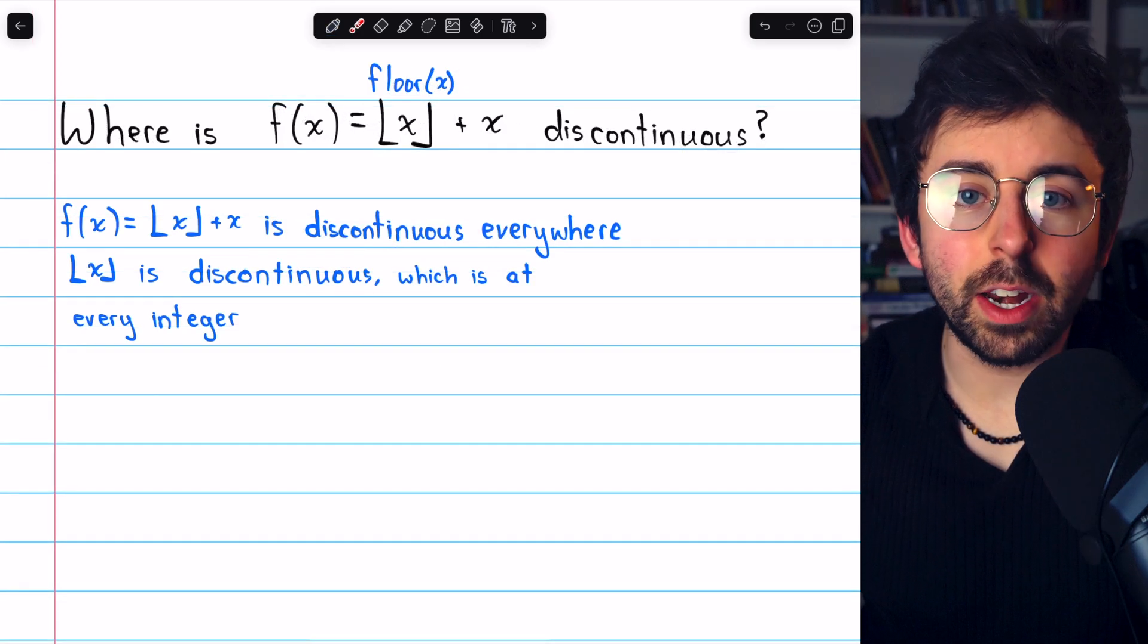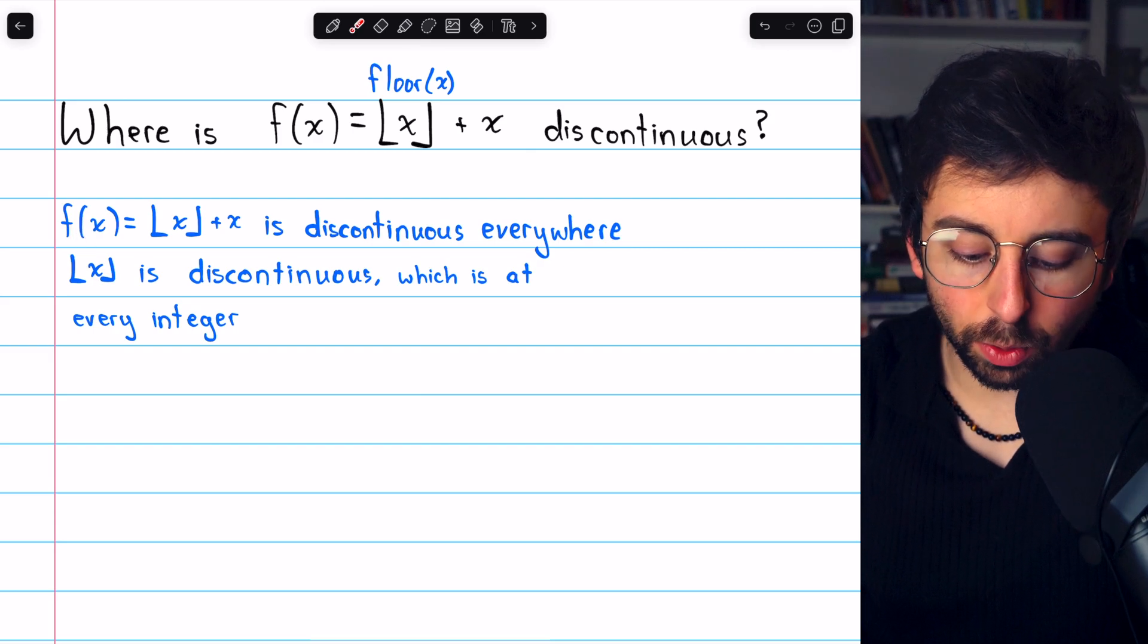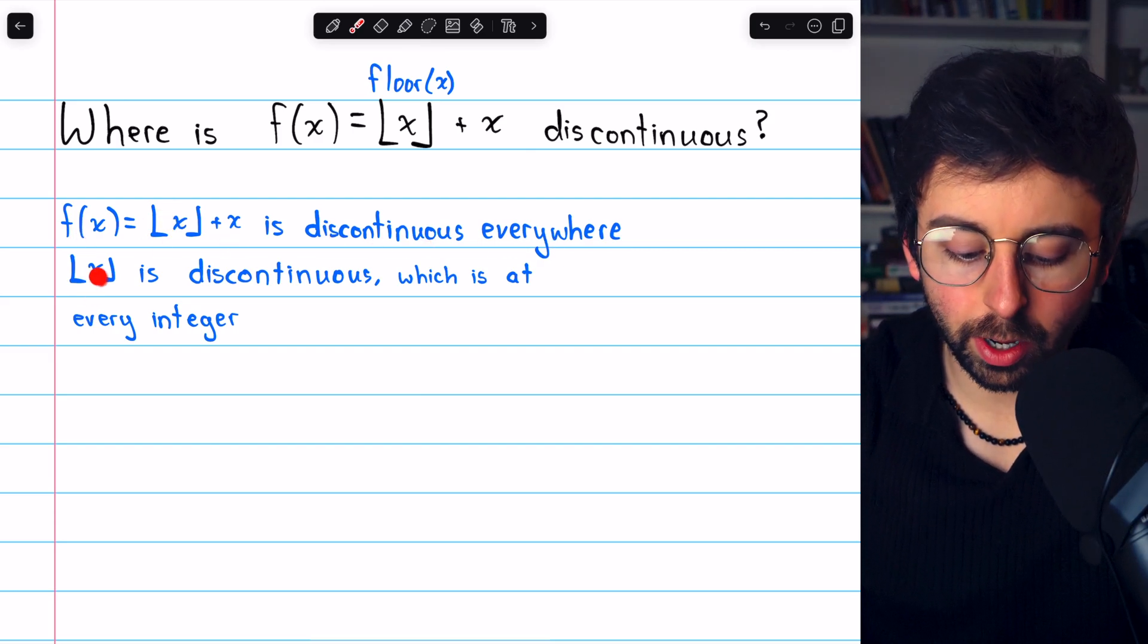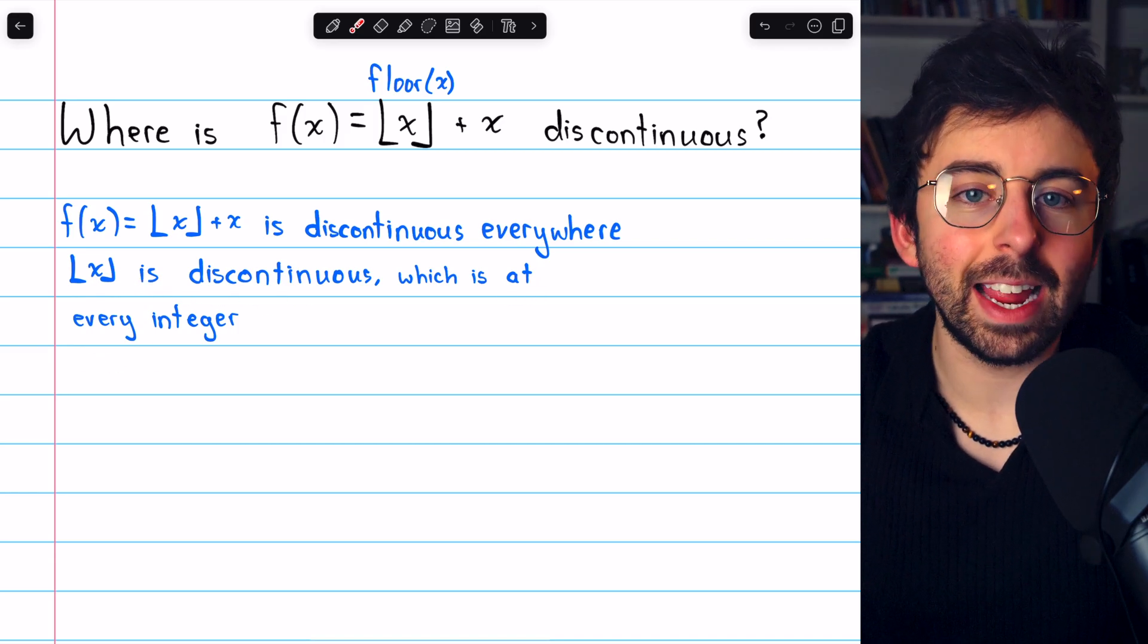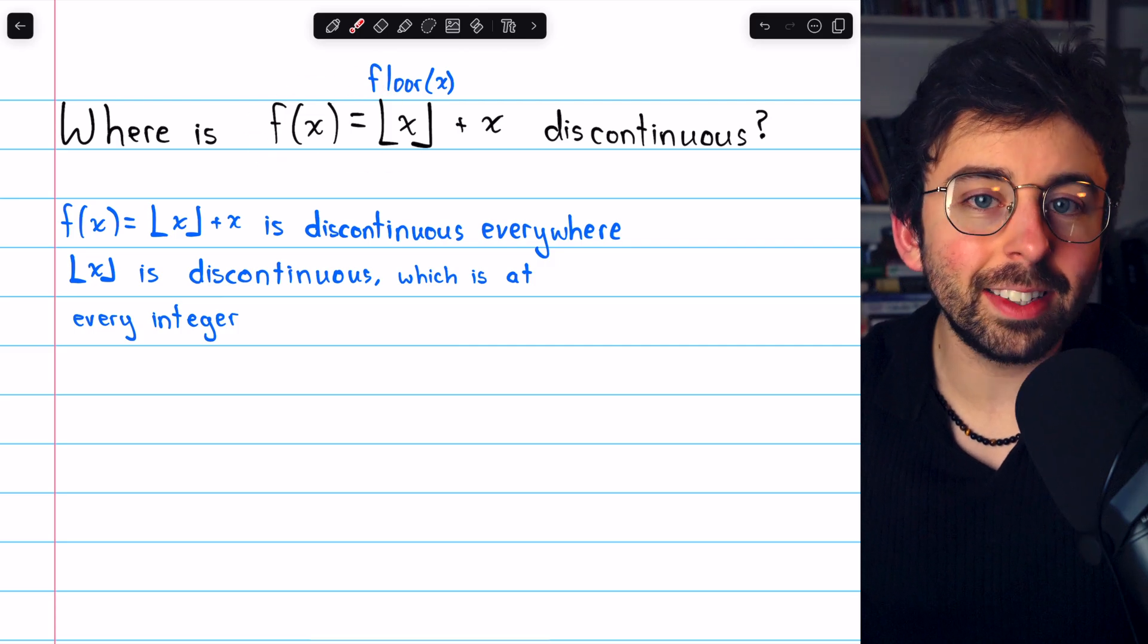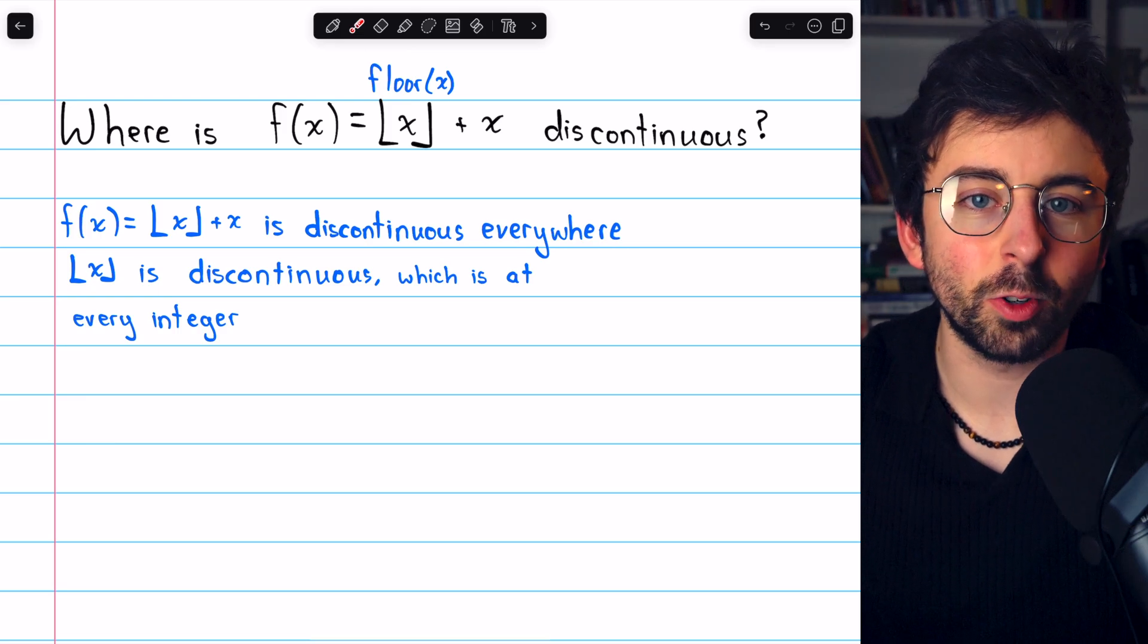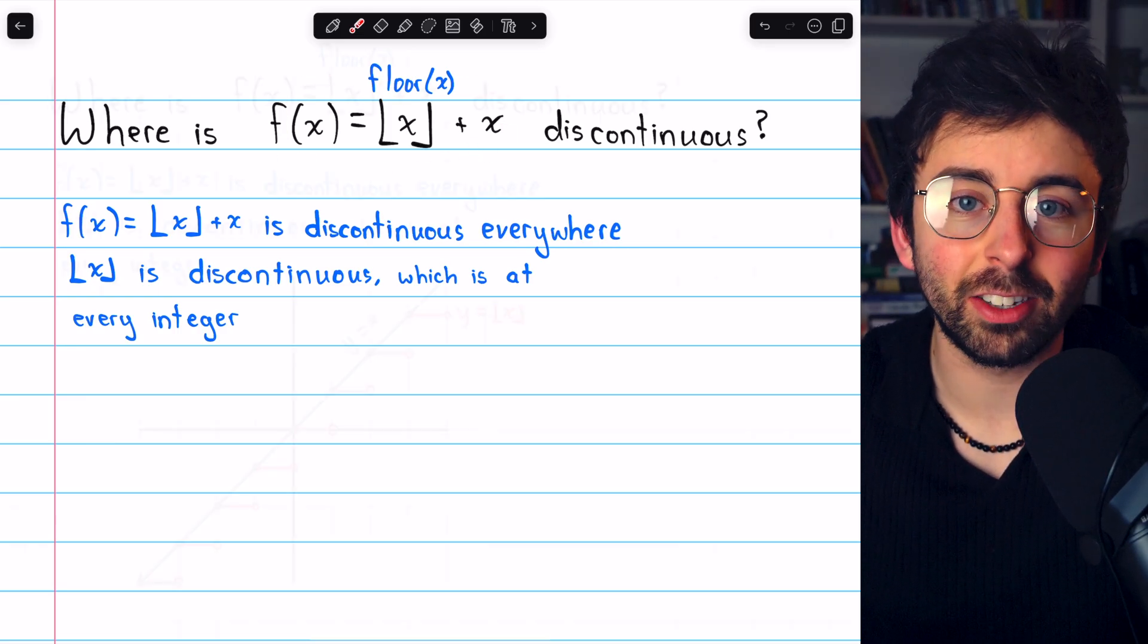We'll look at a graph in a moment, but this is the answer to the discontinuity question. f(x) equals floor of x plus x is discontinuous everywhere floor of x is discontinuous, which is at every integer. So this function f(x) is discontinuous at every integer because the floor function is discontinuous at every integer, and those problems still exist when we add x to it.